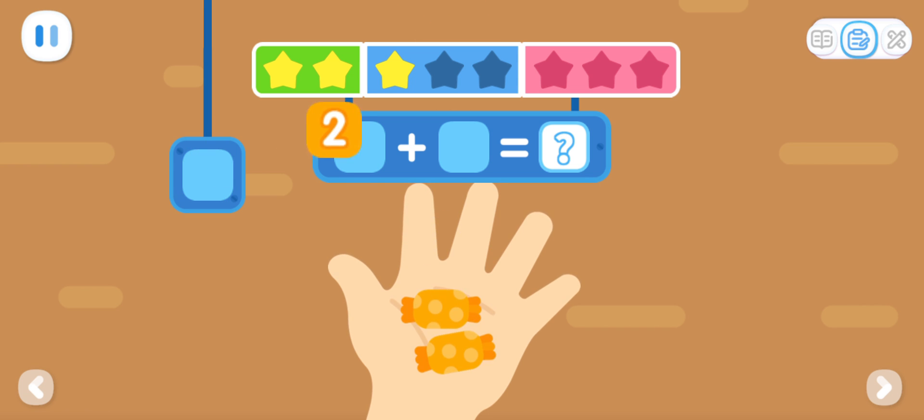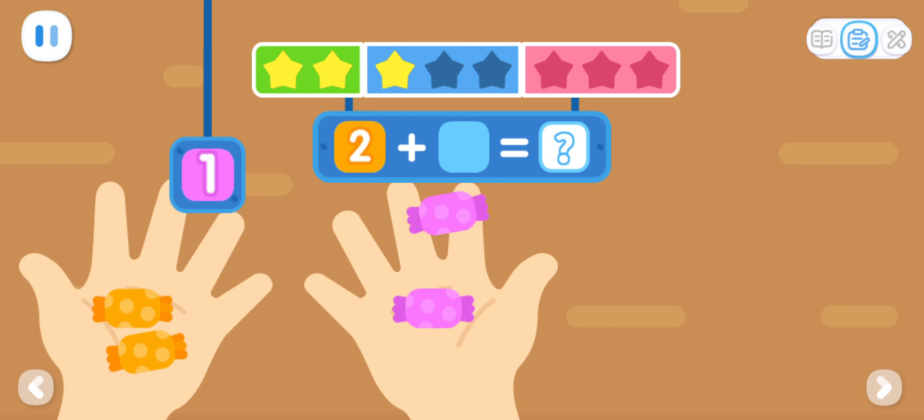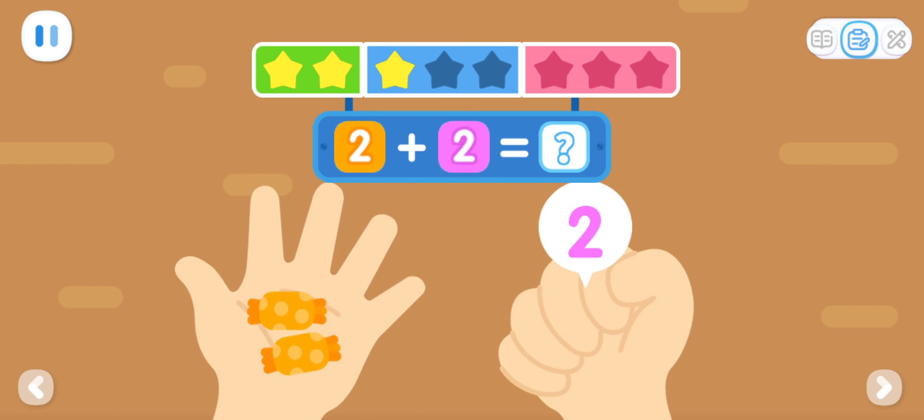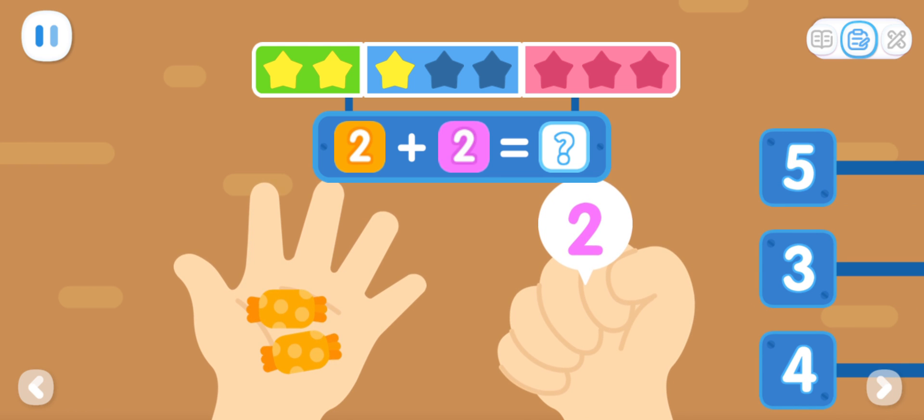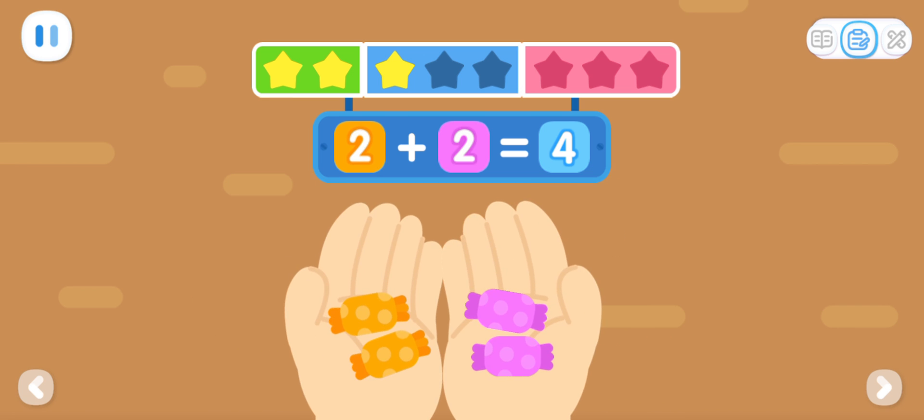There are two candies in the left hand. There are two candies in the right hand. How many candies are there in total? You've got it! Two plus two equals four.